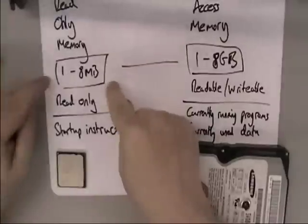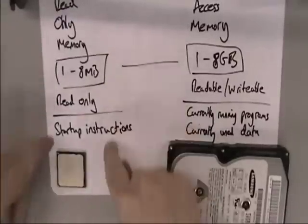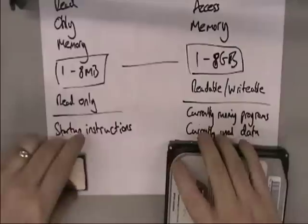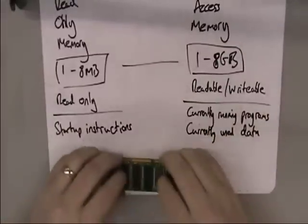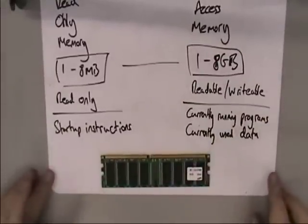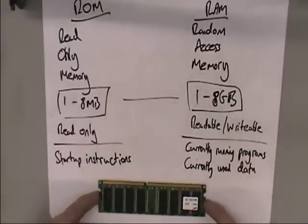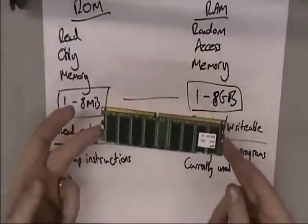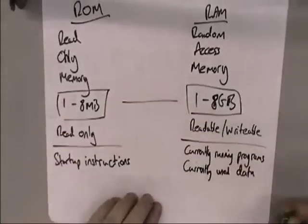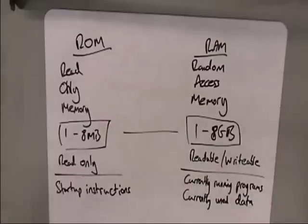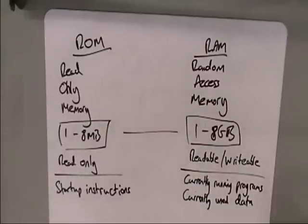So in summary: ROM is very small, read-only, and used for start-up instructions. RAM is much bigger — about a thousand times bigger — it's readable and writable, and it's used for currently running programs and currently used data so that your computer can actually do stuff. And that is the difference between ROM and RAM. Hopefully now you should be able to answer any questions based on what I've just said.